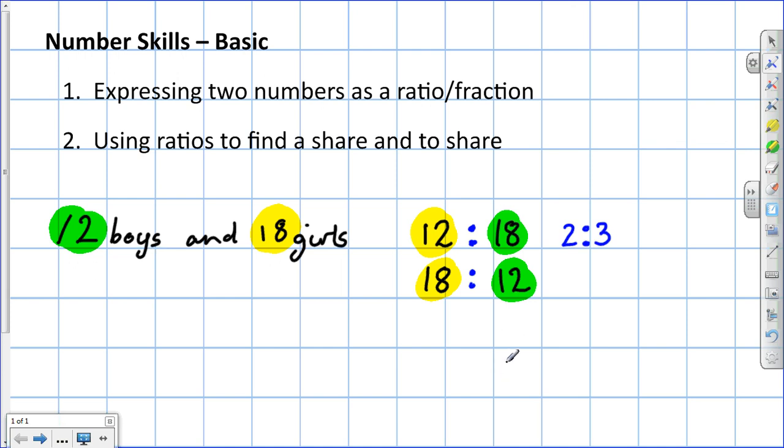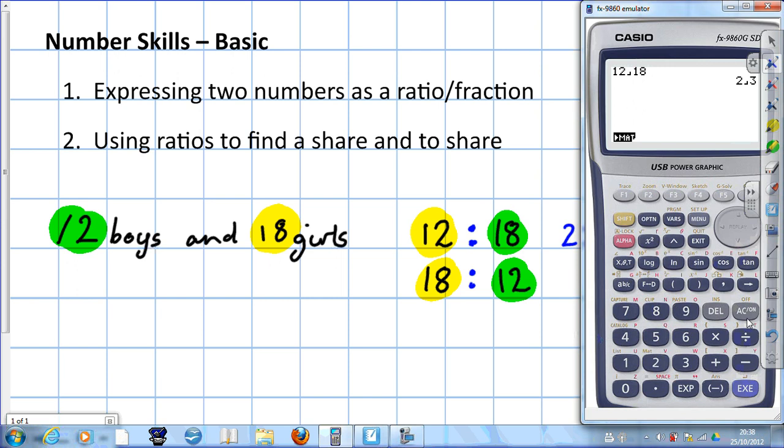What happens if we were asked to find the ratio of girls to boys and give it in its simplest form? If you type in 18 over 12, then press execute, it gives us 3 to 2. And that's the answer, 3 to 2.